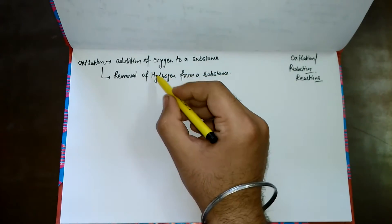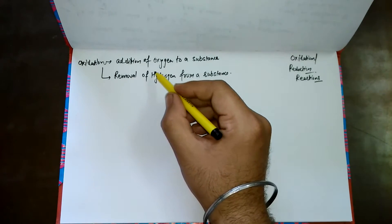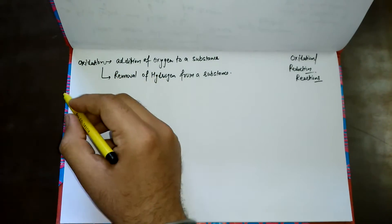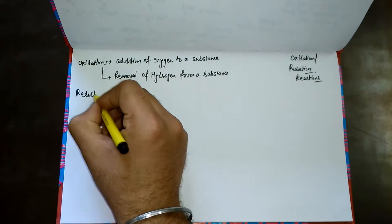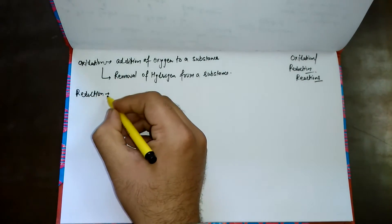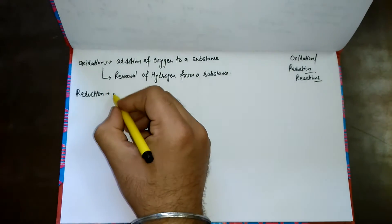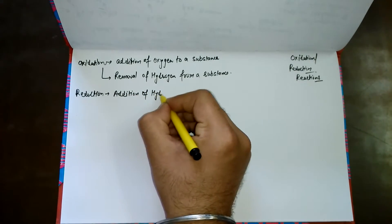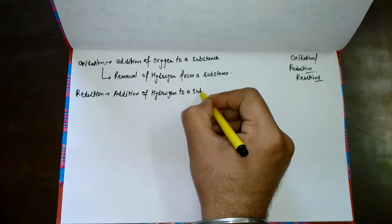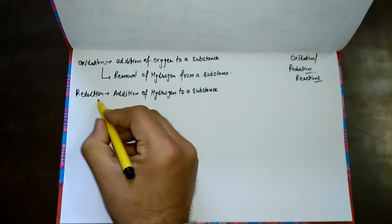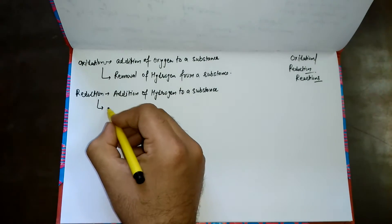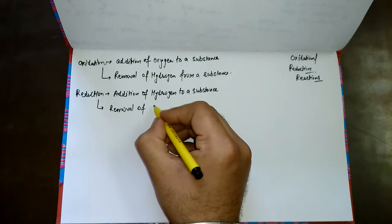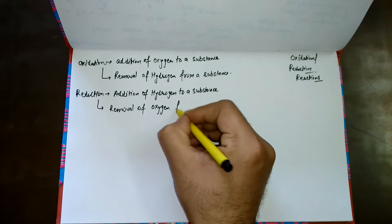When these two things happen simultaneously or independently, we say oxidation takes place. When we say reduction, reduction is the opposite of oxidation. Reduction occurs when there is an addition of hydrogen to a substance, or similarly, a removal of oxygen from a substance.